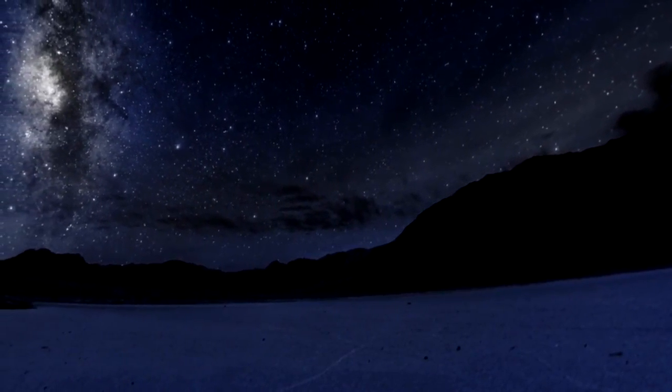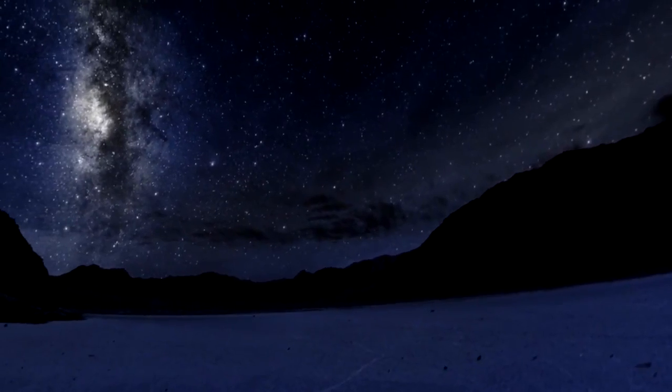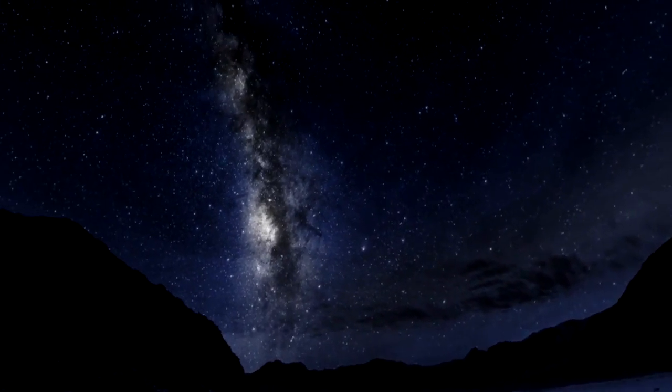Fomalhaut is visible from the southern hemisphere and is one of the brightest stars in our night sky. Lying around 25 light-years distant, it's also relatively close.